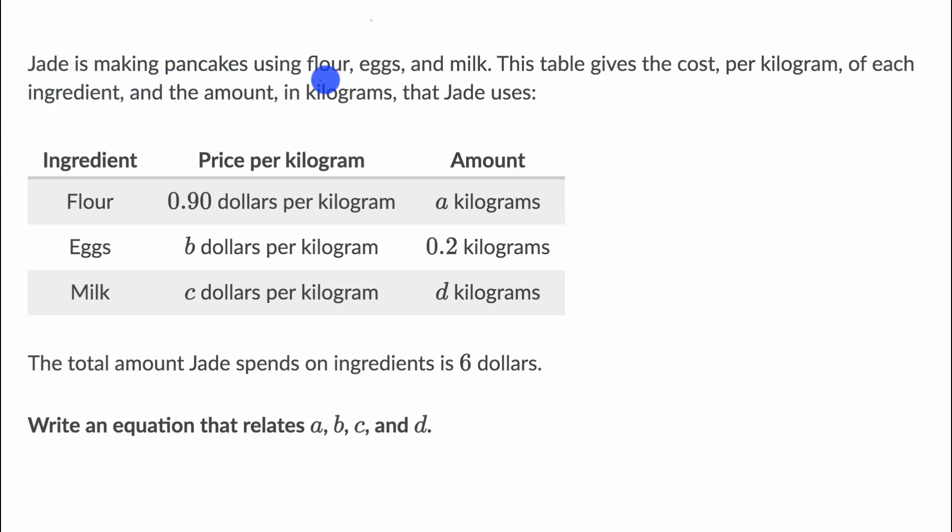We are told that Jade is making pancakes using flour, eggs, and milk. This table gives the cost per kilogram of each ingredient and the amount in kilograms that Jade uses.